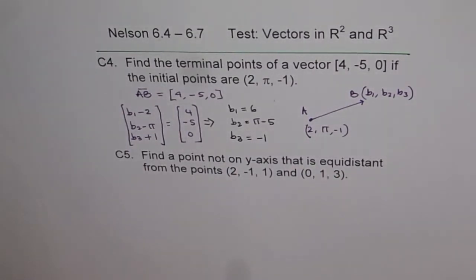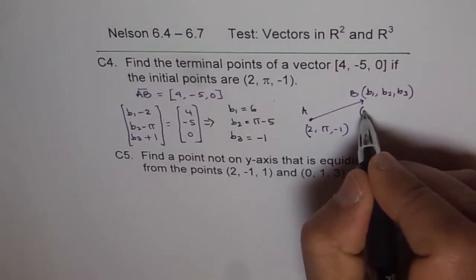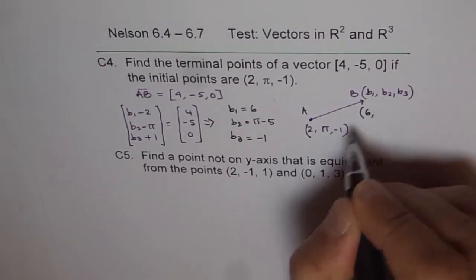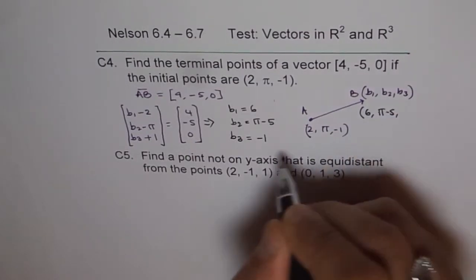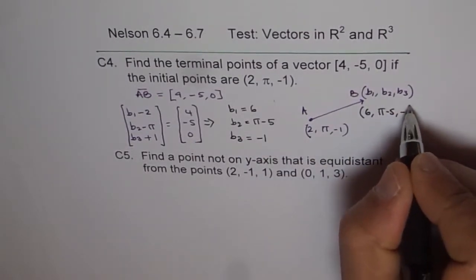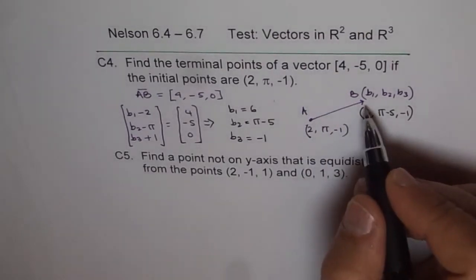And that's how we get our point. So we can write down our answer that the point B is (6, π - 5, -1). That is b₁, π minus 5, and minus 1 along the z-axis. I hope you understand how to find the points when you are given the vector. So we have initial and the terminal point here.